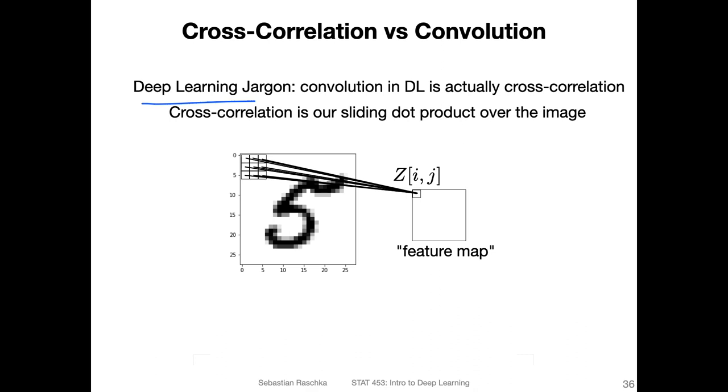In deep learning, we sometimes use words from other fields that have a different meaning. Convolution would be one of those. The convolution in deep learning is actually what is more commonly known as cross-correlation.